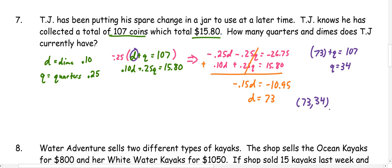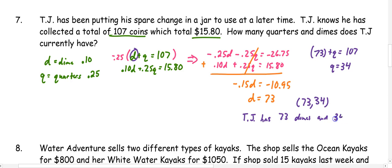Remember, it's a word problem, so we need to write a sentence. TJ has 73 dimes and 34 quarters.